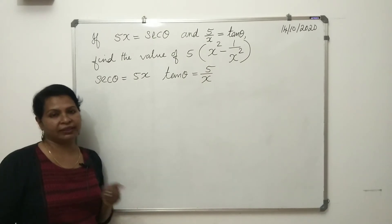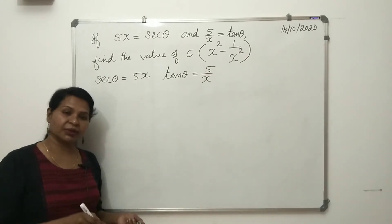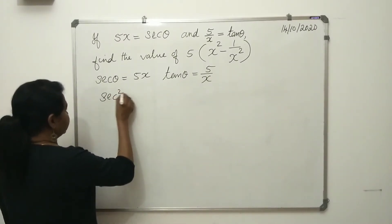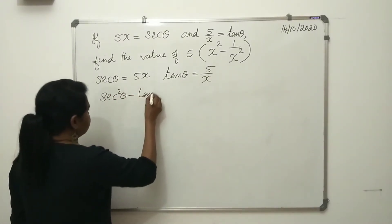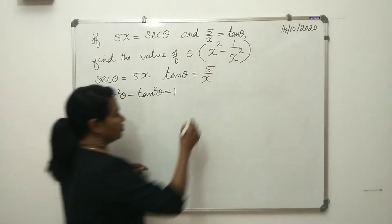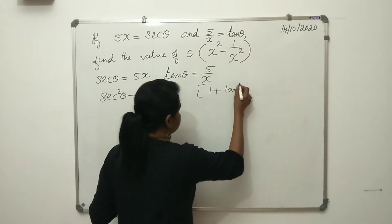So what is sec²θ minus tan²θ? It is 1. Sec²θ minus tan²θ equals 1. Why? Because 1 plus tan²θ equals sec²θ, we know it.